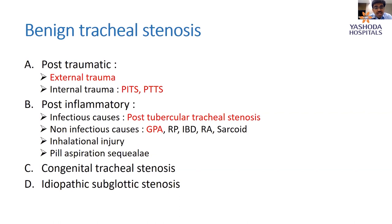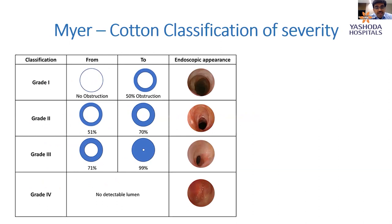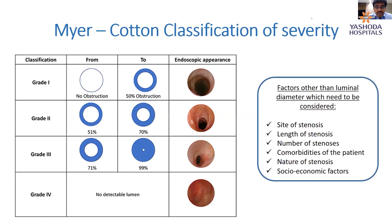The case I'll be showing is a complete tracheal stenosis. A complete tracheal stenosis is defined as Grade 4 — no detectable lumen. There are many other factors to figure in when deciding the choice of therapy: the site of stenosis, the length, the number, comorbidities, and in India also the socio-economic factors.